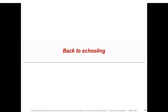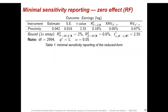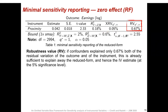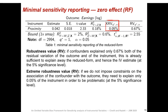Now we return to our running example, starting with the sensitivity of the reduced form estimate. Here is our proposal for a minimal sensitivity reporting table, replicating the original estimate, standard error, and t-value, and providing sensitivity statistics: the extreme robustness value and robustness value. The robustness value tells us that if confounders explained only 0.67% of both the residual variation of the outcome and of the instrument, this confounder is already sufficient to explain away the reduced form and hence the IV estimate. The extreme robustness value tells us that without any constraints on the confounder's association with the outcome, confounders need to explain only 0.05% of the residual variation of the instrument to be problematic.